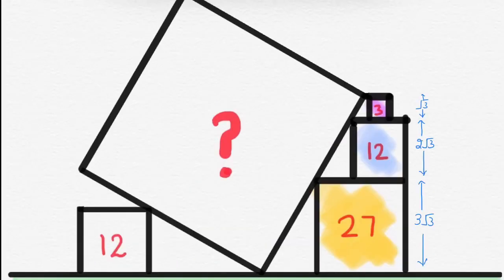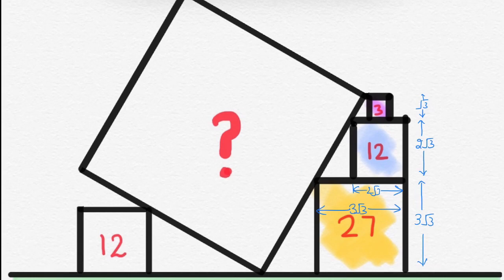So, we have obtained the side of yellow square is 3 root 3 and the length of blue square is 2 root 3. Hence, the length of this red side will be 3 root 3 minus 2 root 3 that is root 3.